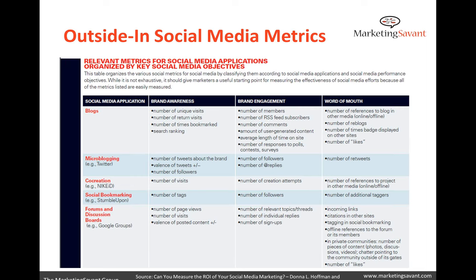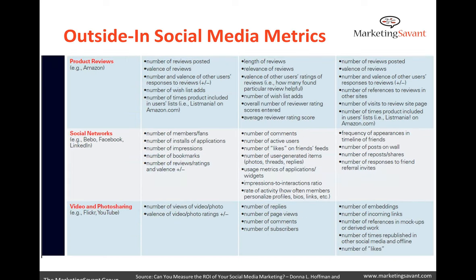That gives marketers ideas of customers' likelihood to be advocates and all of those things. The middle column is brand engagement and brand awareness — things we typically measure as marketers, but this encourages us to go further and look at it from the inbound, customer perspective. It's a great article in the MIT Sloan Management Review a couple years ago, very easy to find online. At the end of this session, we'll talk about resources and I have a page where we'll put the links.